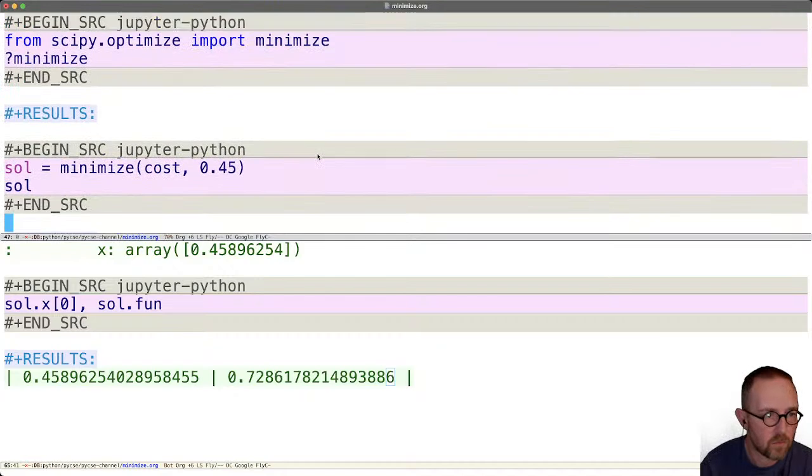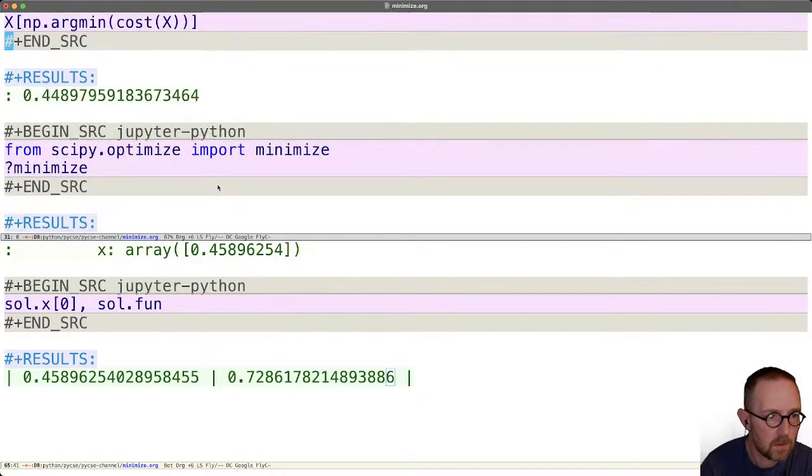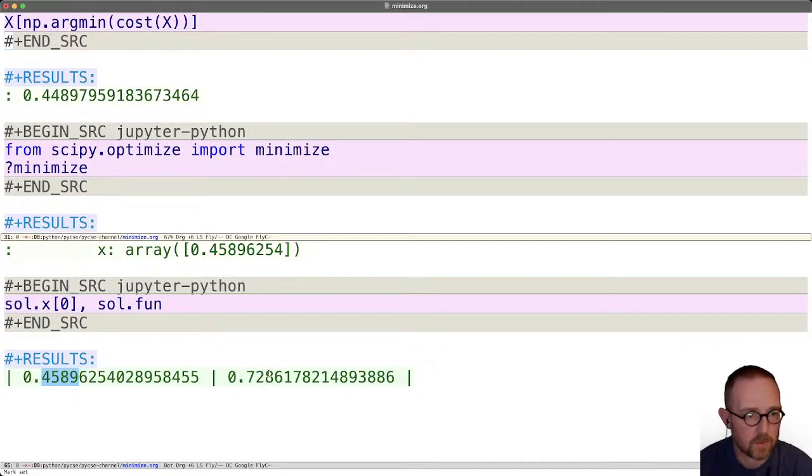Let's look, let's scroll back up here. So we had 0.4489 which is not exactly this, and so the cost that goes along with this is not going to be as low as this one. Still not too bad.